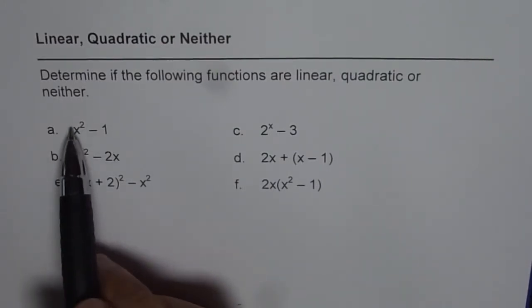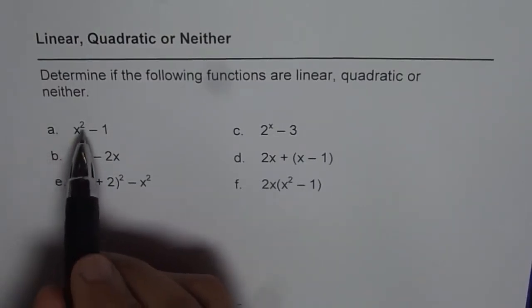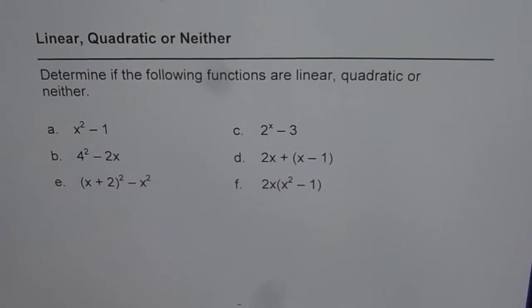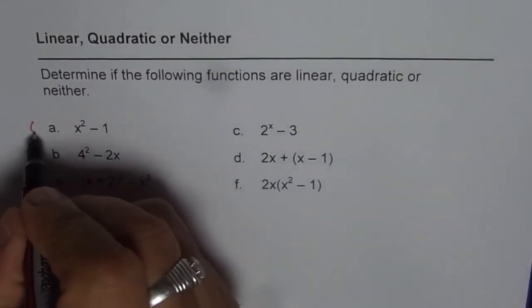The first one is x² - 1. Clearly we have x to the power of 2, so it is quadratic. We can write Q for quadratic. So the first one is quadratic.